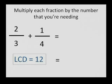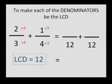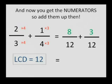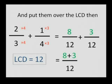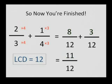Multiply each fraction by the number that you're needing, by the meter, to make each of the denominators be the LCD. And now you get the numerators, so add them up then, so add them up then. Now put them over the LCD then, and now you're finished.